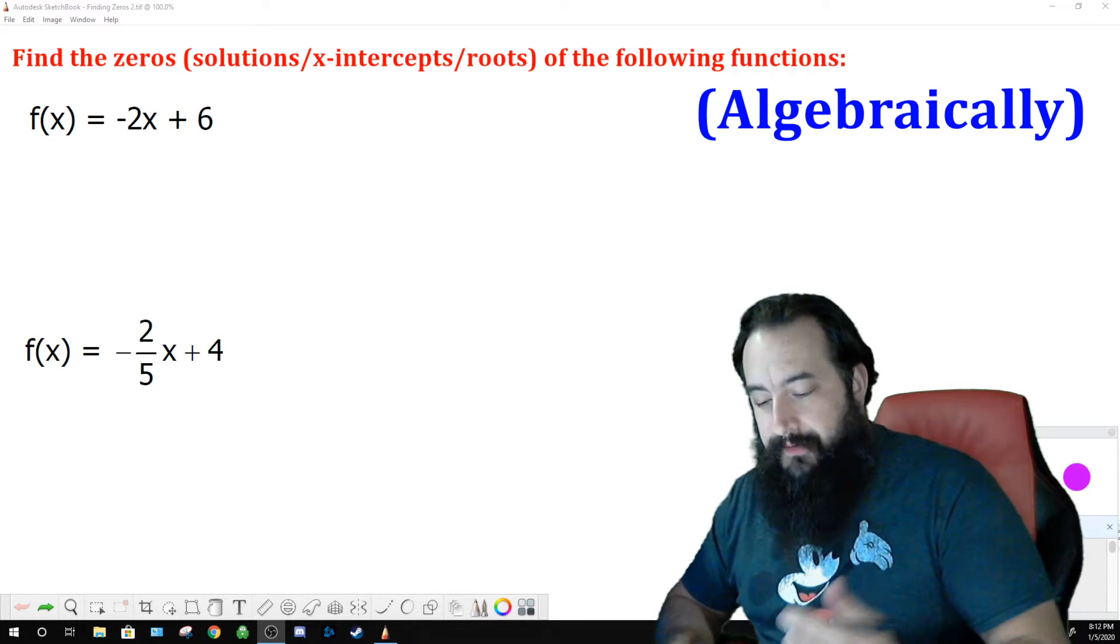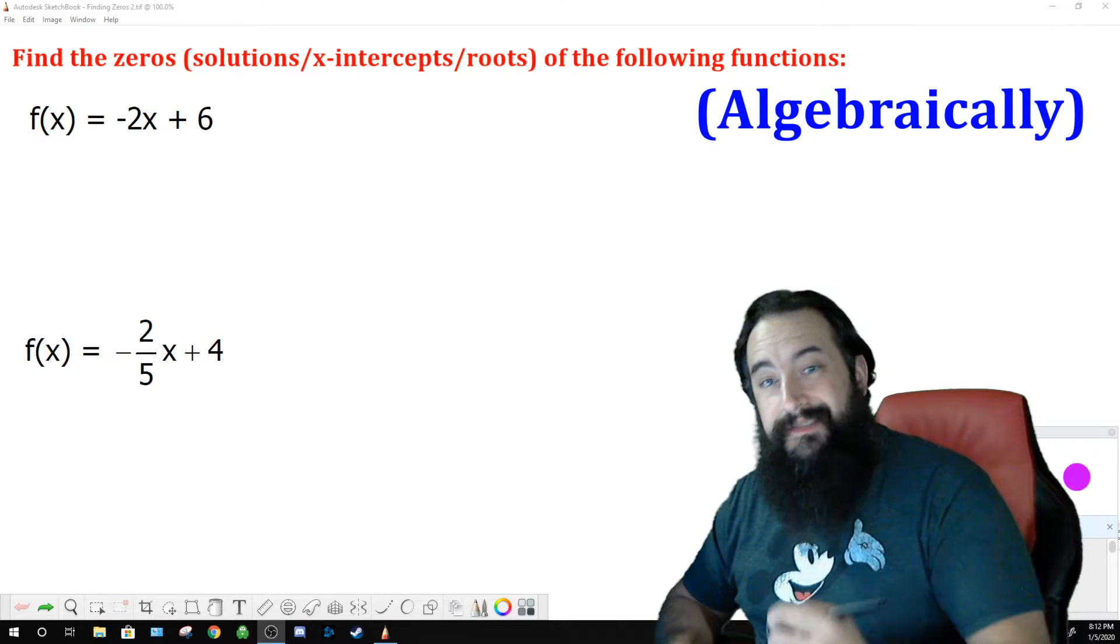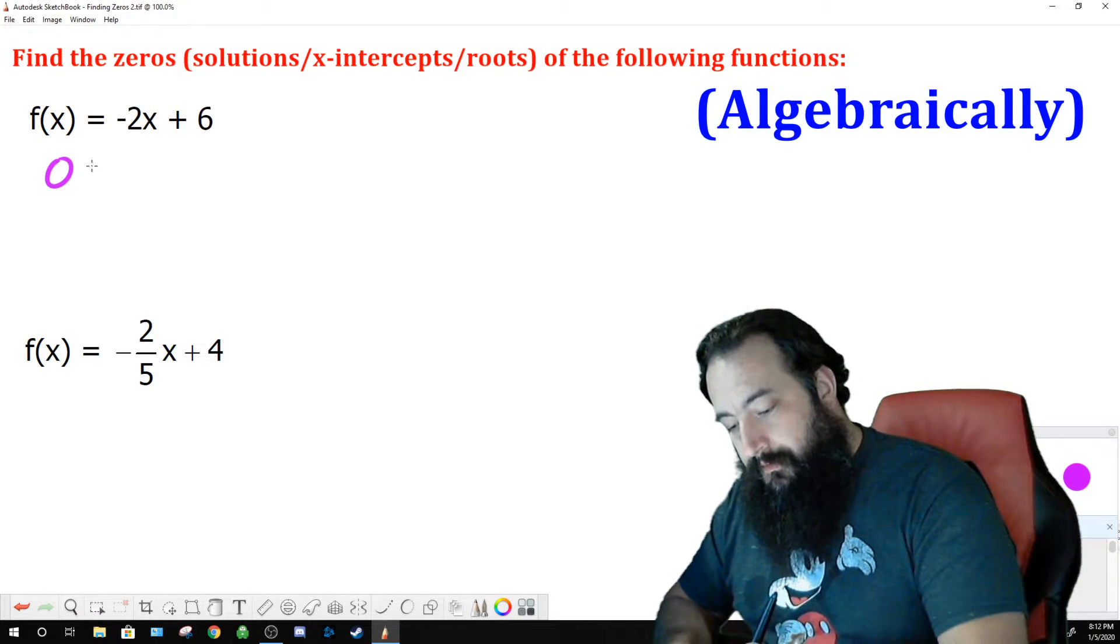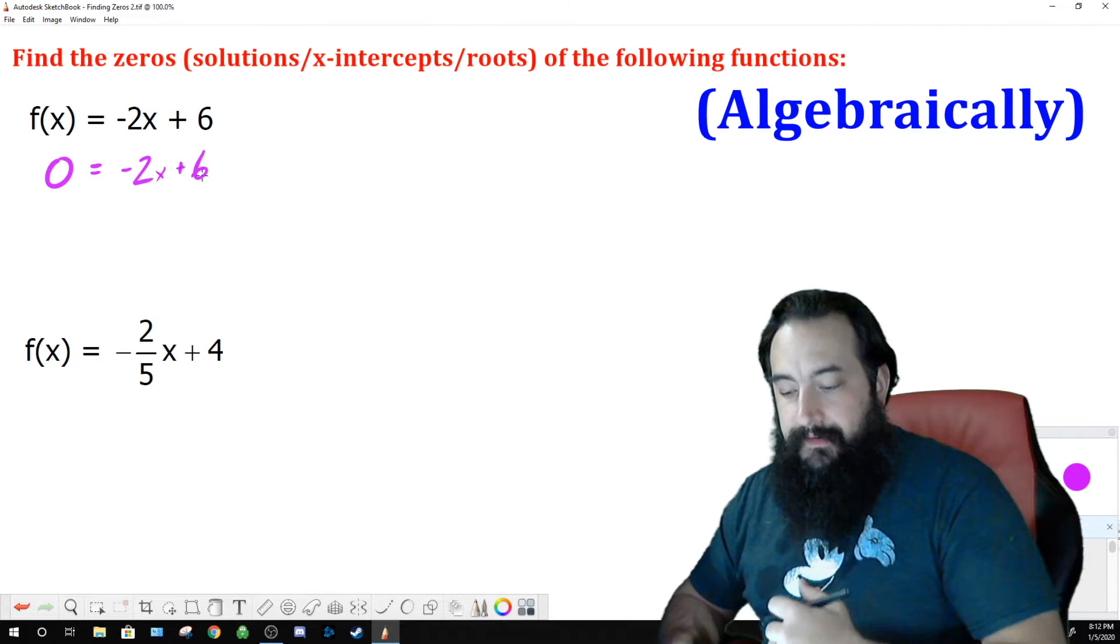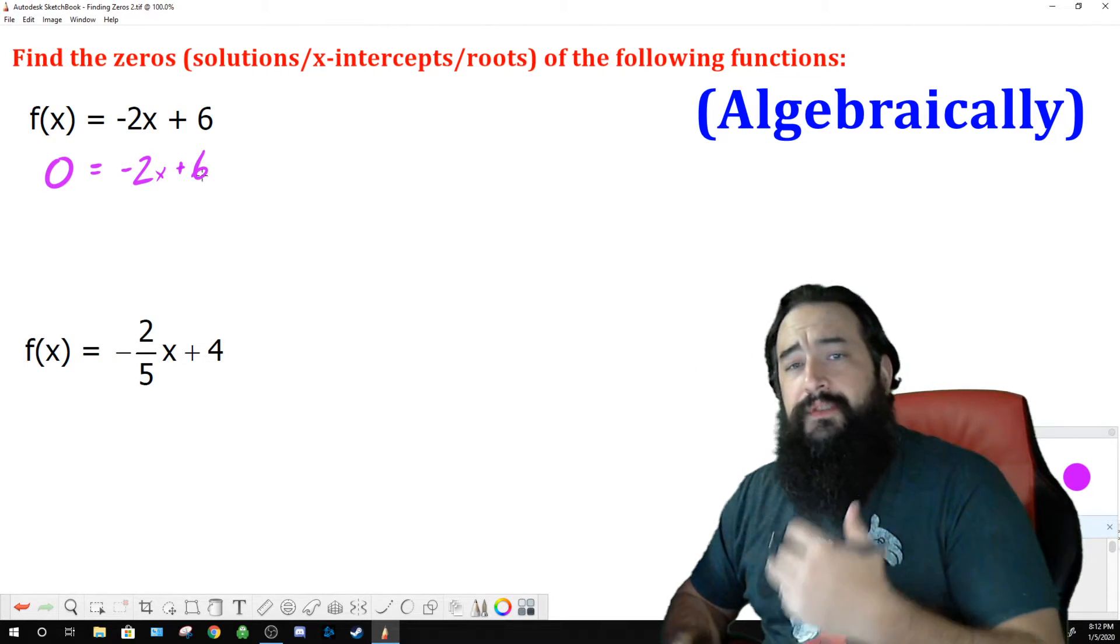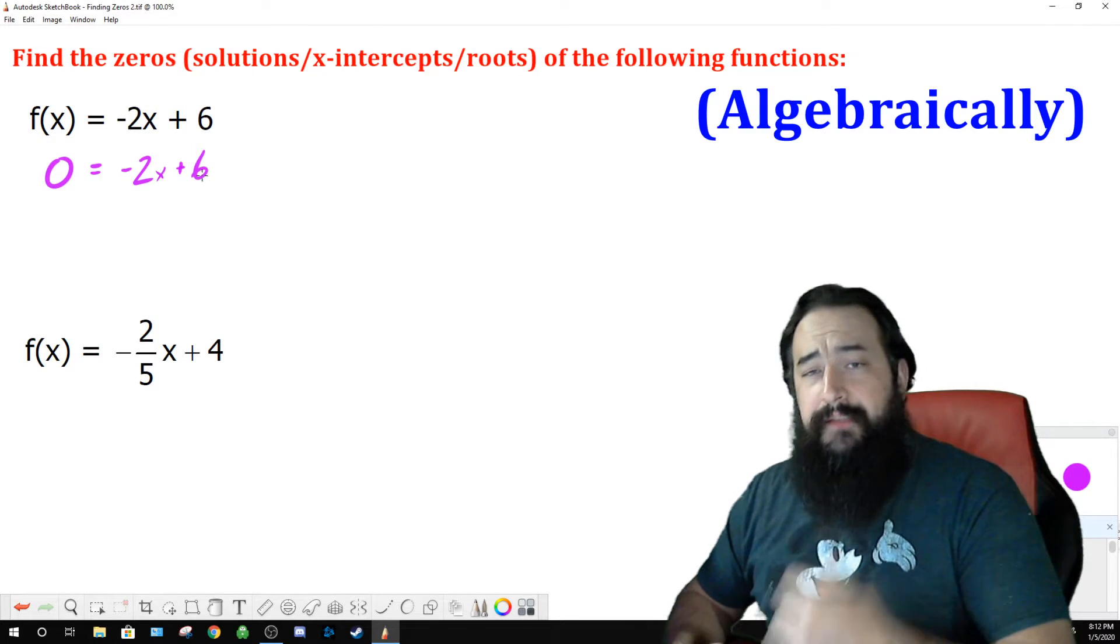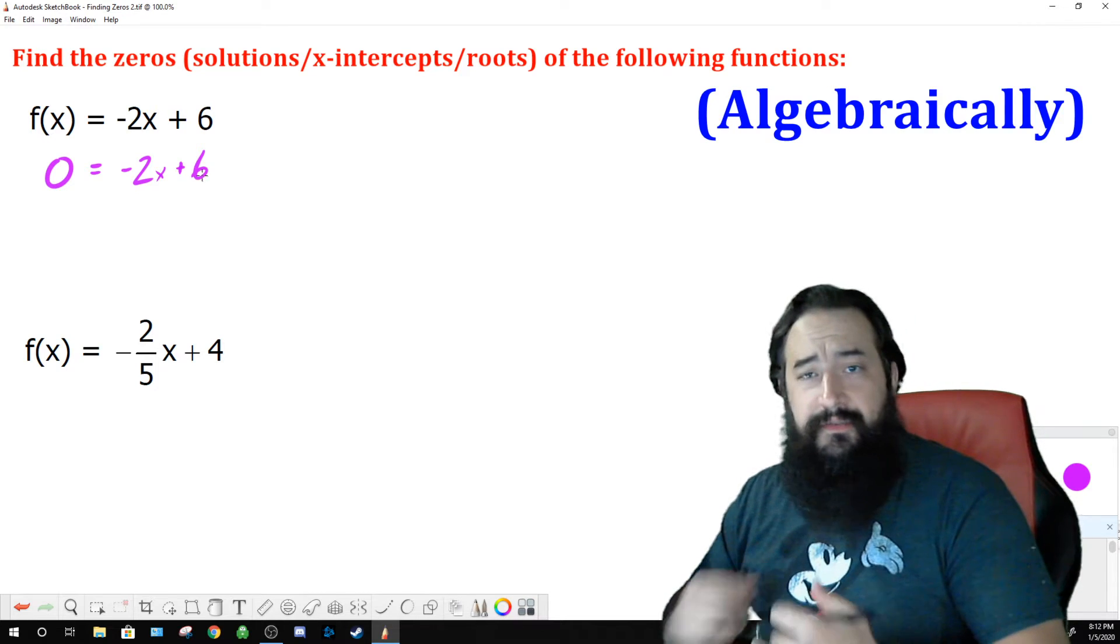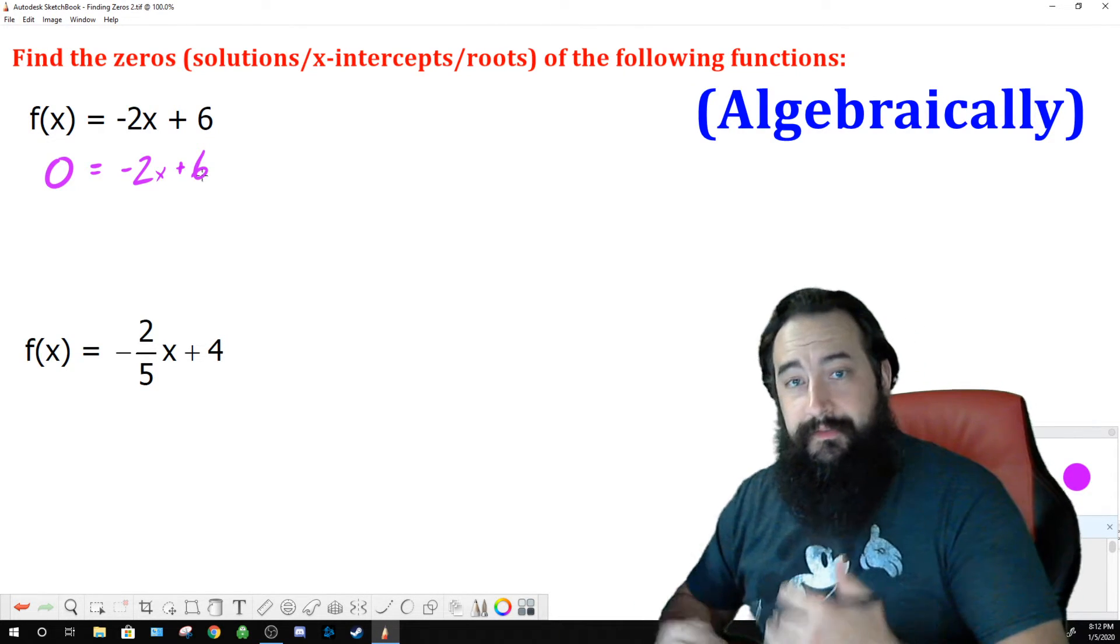I have f(x) again. I'm not going to read it again. Instead of f(x), I'm going to substitute in zero, and this is equal to negative 2x plus 6, the function rule. Now I'm going to solve for x. When you're solving for a variable, we're using two different properties: the inverse property for either addition or multiplication, and the property of equality for either addition or multiplication.